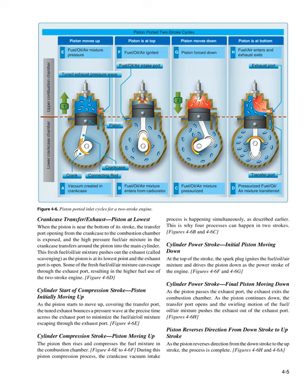Cylinder compression stroke: the piston rises and compresses the fuel mixture in the combustion chamber. During this piston compression process, the crankcase vacuum intake process is happening simultaneously — this is why four processes can happen in two strokes. Cylinder power stroke: at the top of the stroke, the spark plug ignites the fuel/oil/air mixture and drives the piston down as the power stroke of the engine.